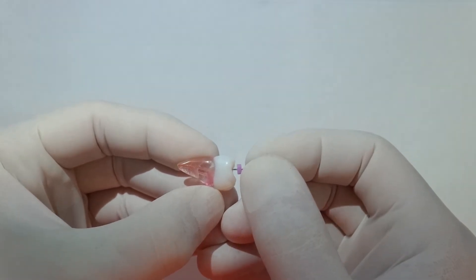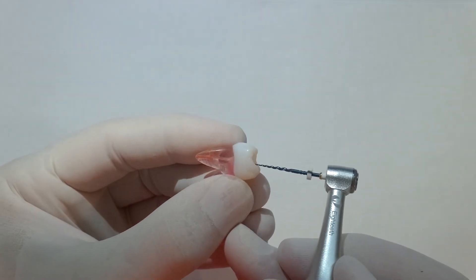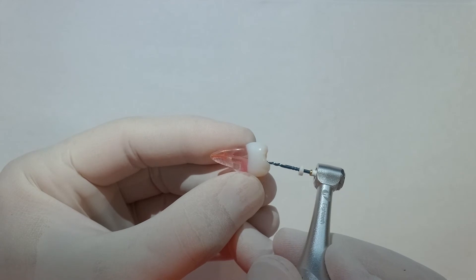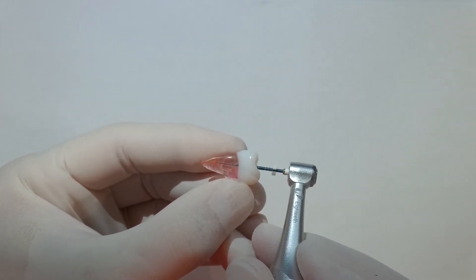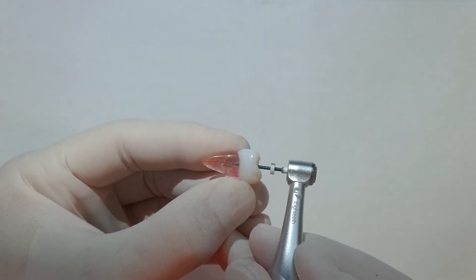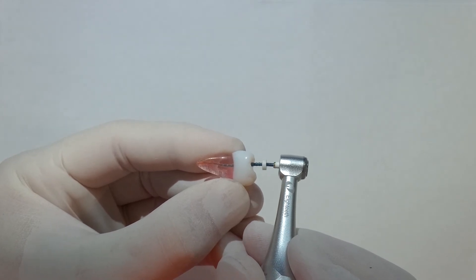Then the next file to go in, the white, the S2. This just does a little bit of preparation, just a little bit further down into the root canal, almost the middle third, just down beyond that coronal third.